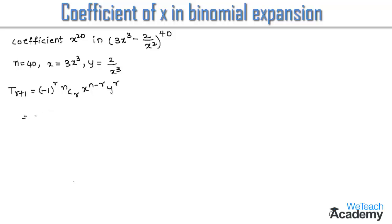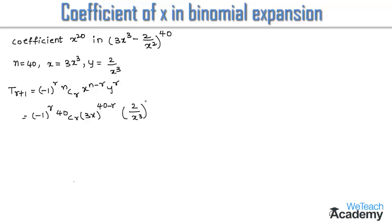Now let us substitute the values of n, x, and y. We get minus 1 whole power r, into 40Cr, into (3x cube) whole power (40 minus r), into (2 divided by x cube) whole power r.